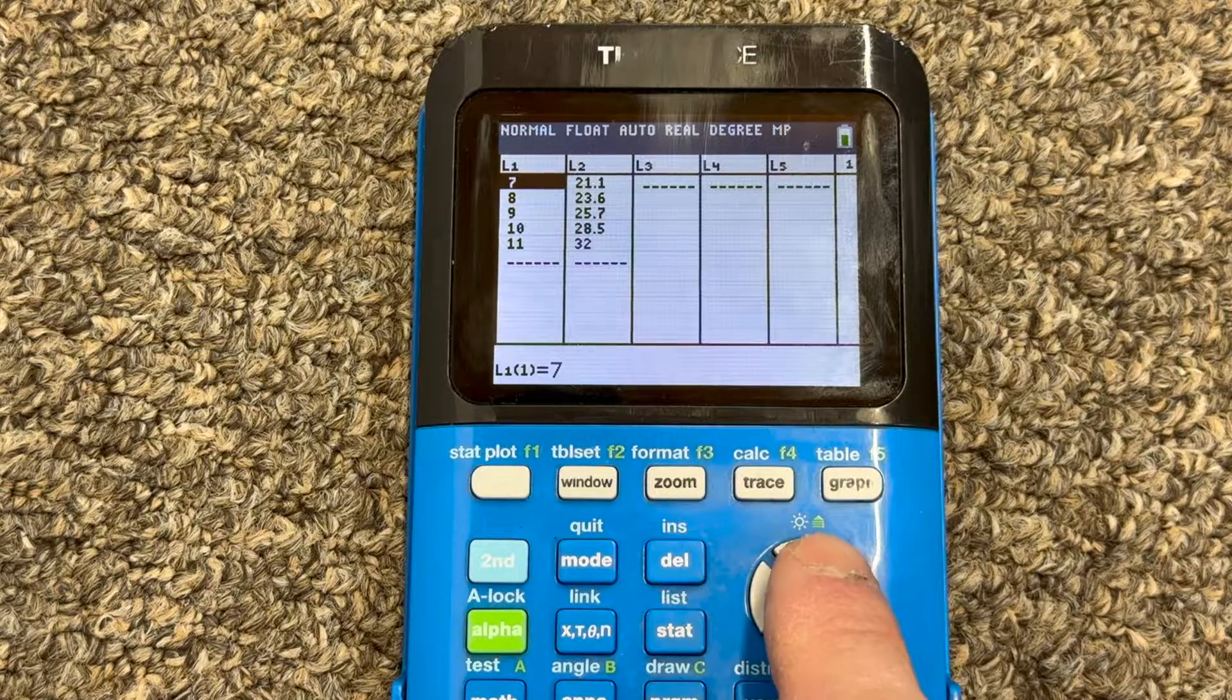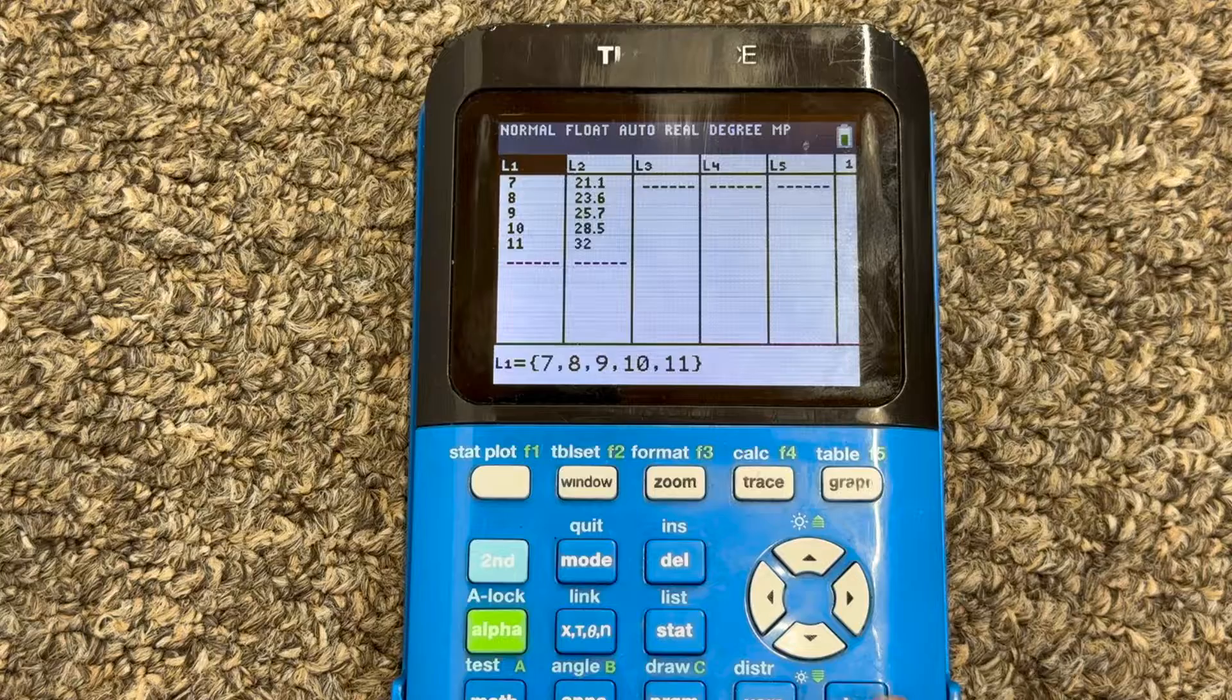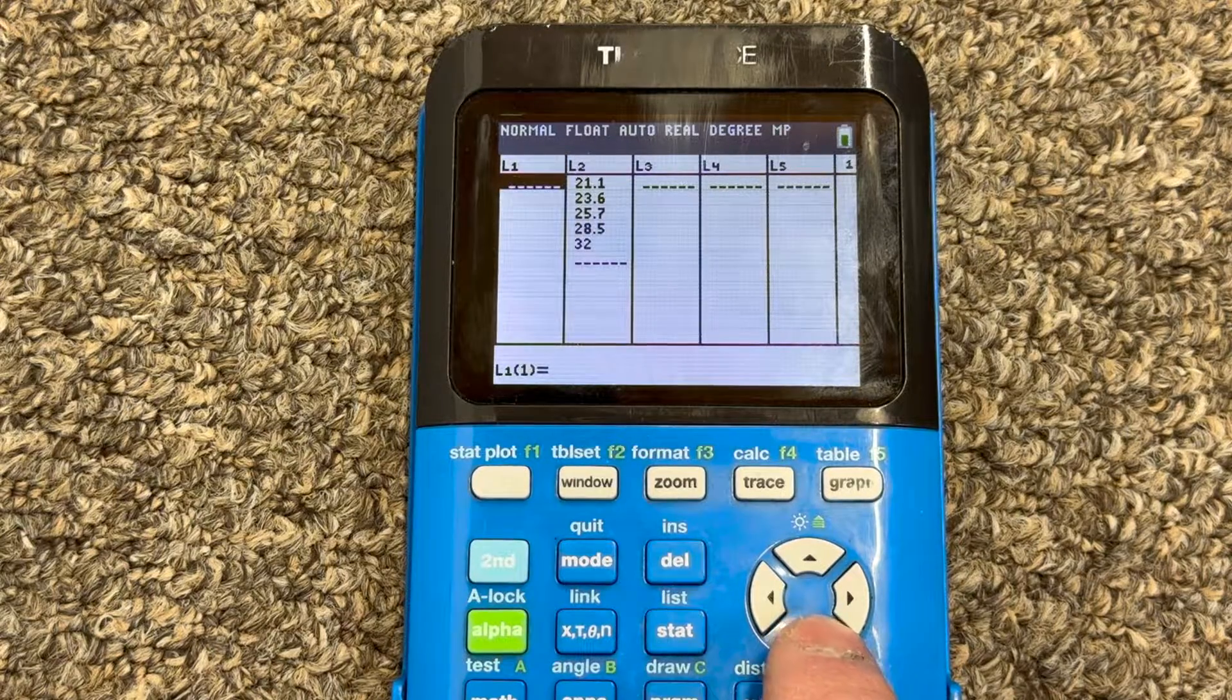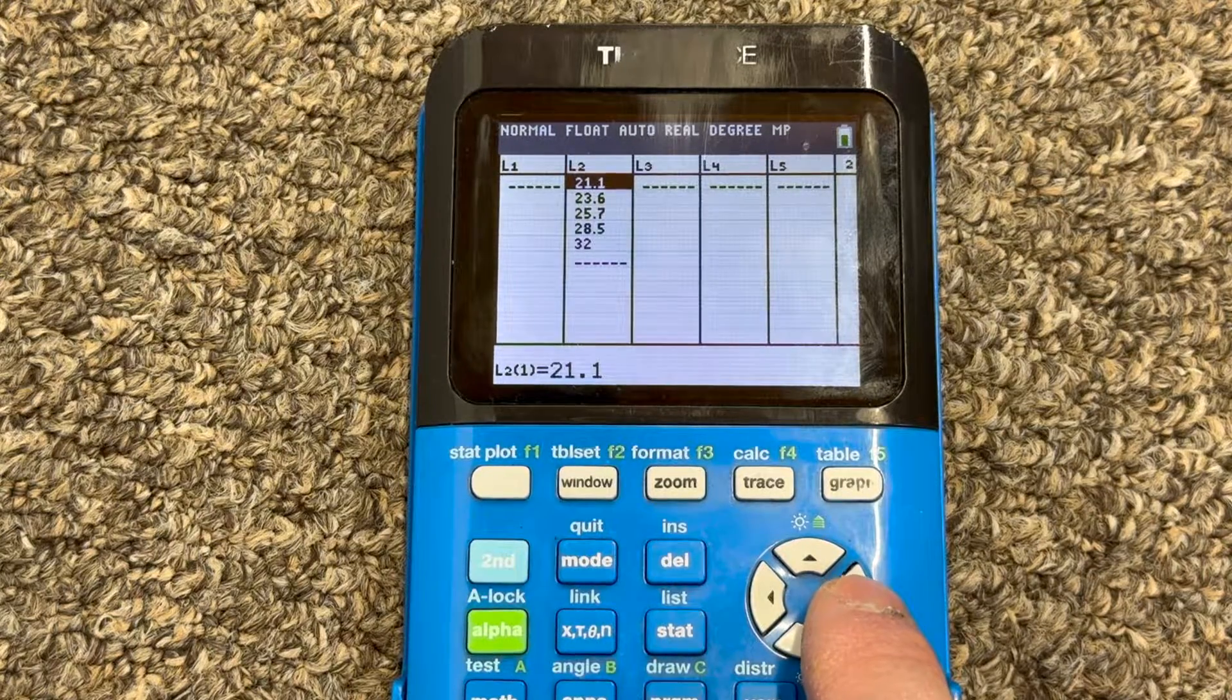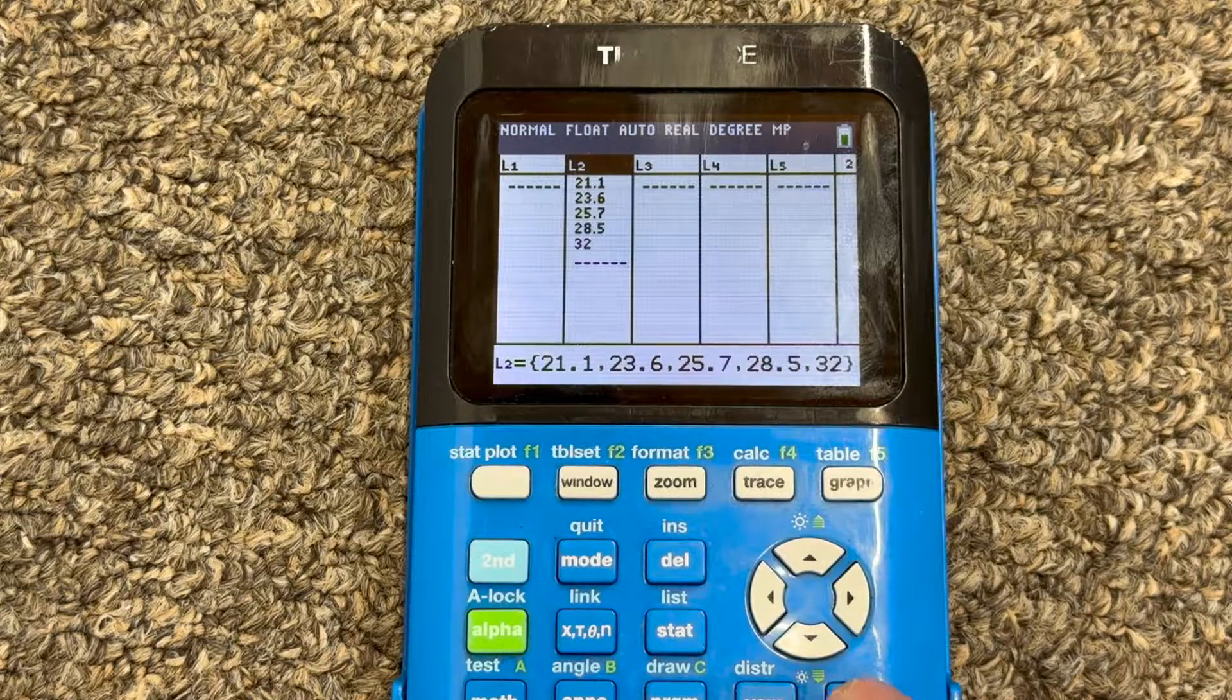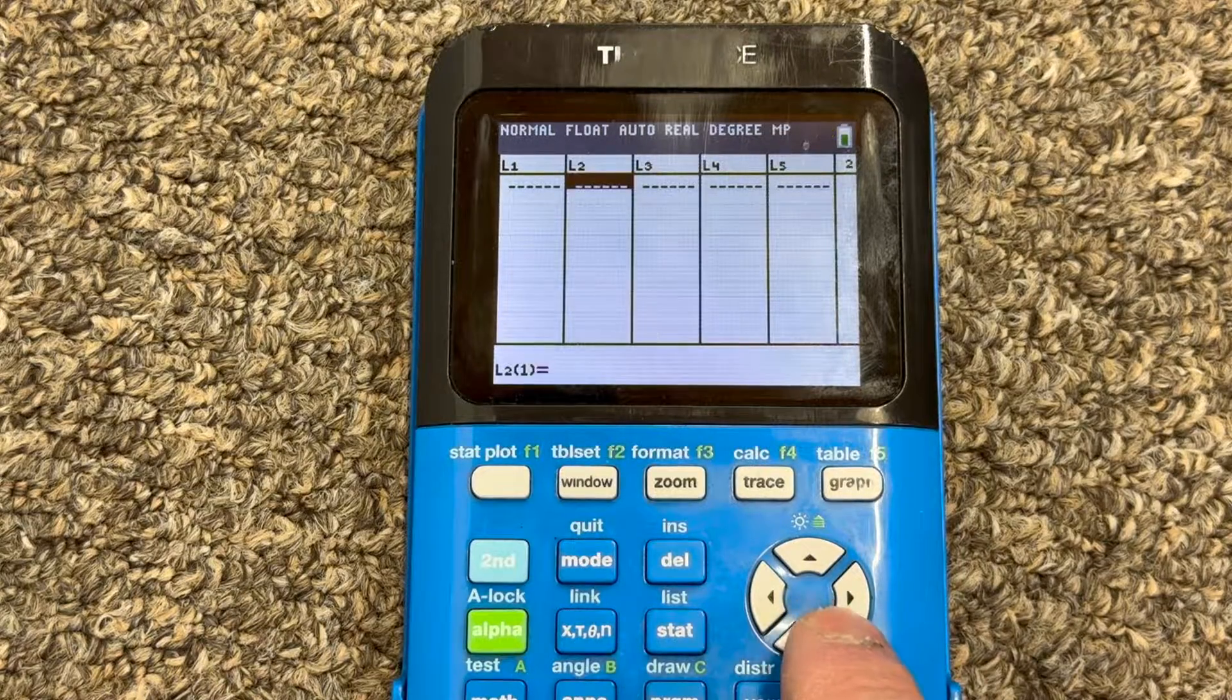If there's numbers in there, just go ahead and arrow up to the top and press clear and arrow down, and that'll clear out the list. And if you arrow to the right and then arrow to the top of list two, press clear and arrow down, it'll clear out that list.